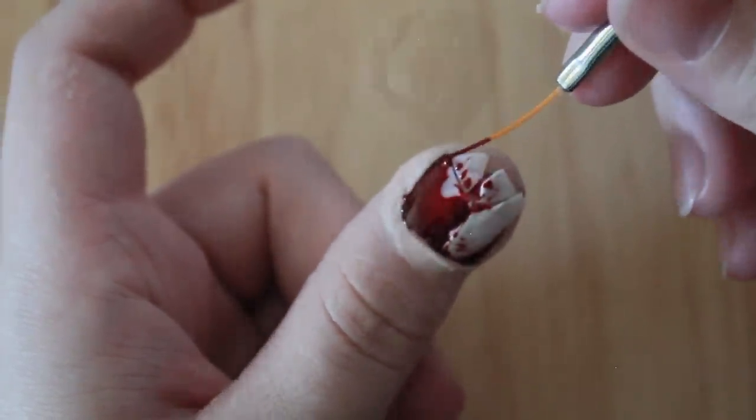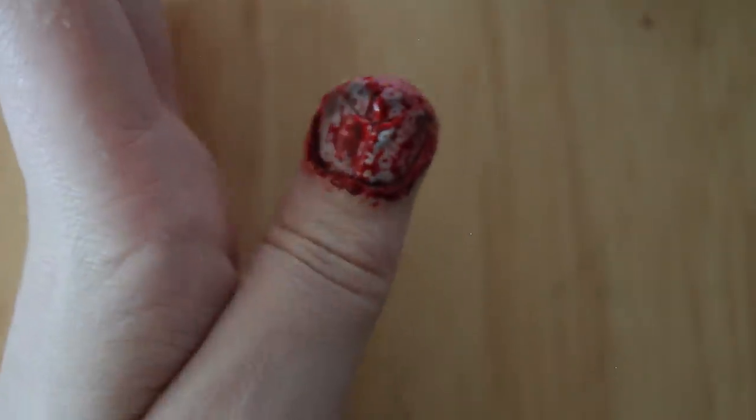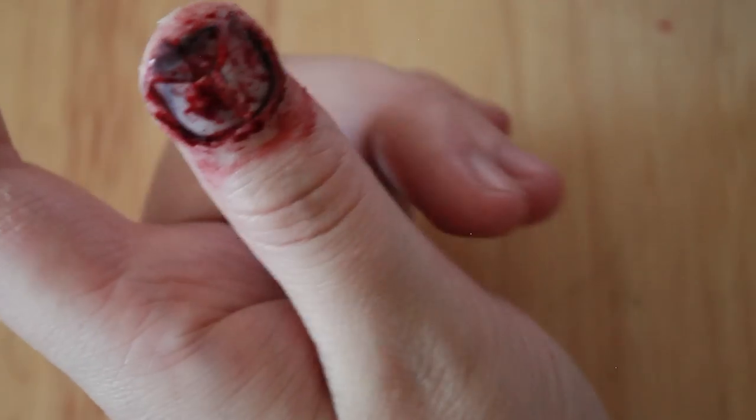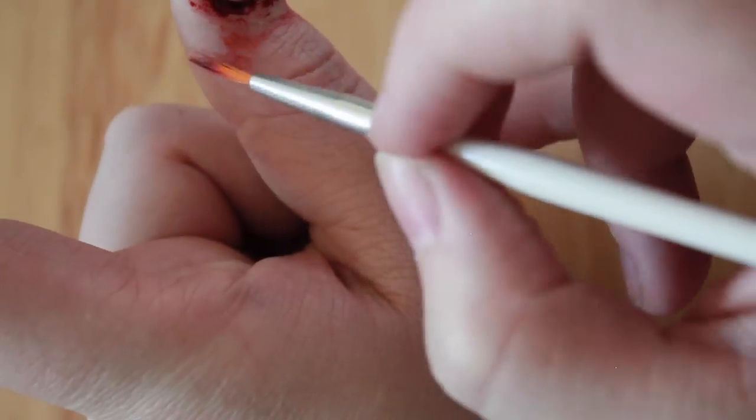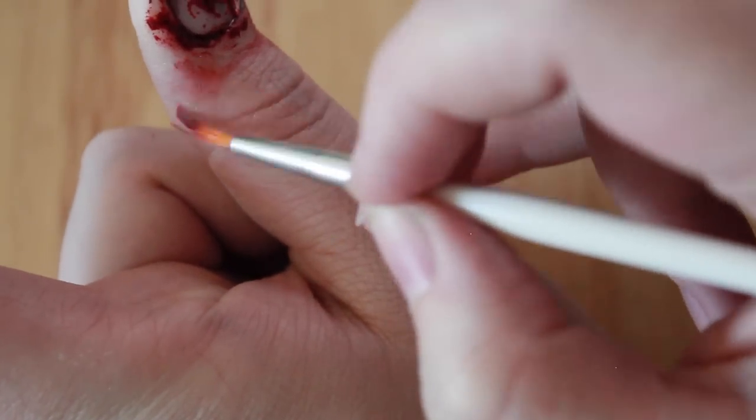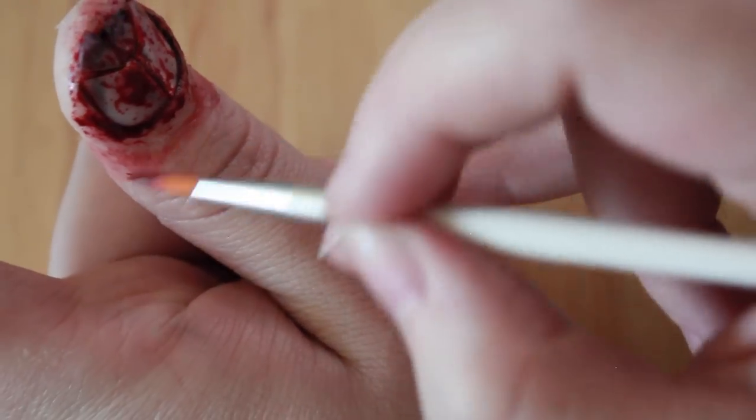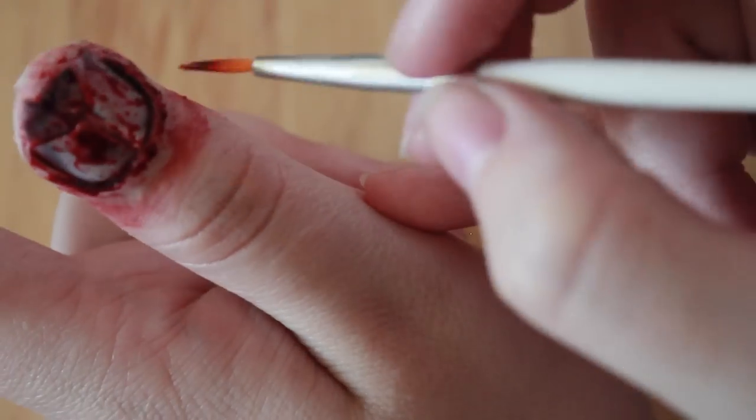Next I'm going to be using fake blood. Now if you don't have fake blood food coloring will work as well but bear in mind that this can stain your finger. I'm just going to add the food coloring underneath the nail and around it. Then what I'm going to do is leave a little gap between the nail and my real finger and then I'm going to add this redness all the way around the thumb.